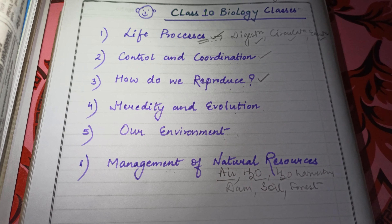Our Environment is the fifth chapter, where we basically deal with our environment — what components we have, such as biotic components and abiotic components, and how these components interact with each other. We will also cover how the food chain is formed, how the food web works, and how energy transfer takes place in the environment.